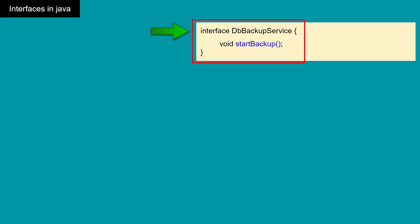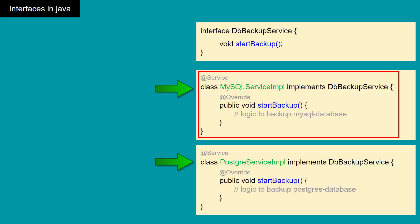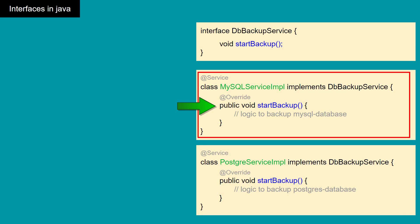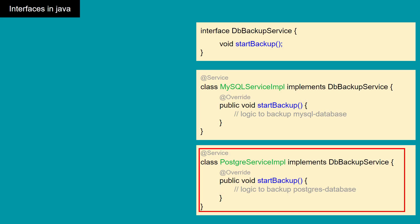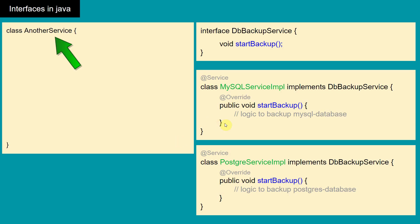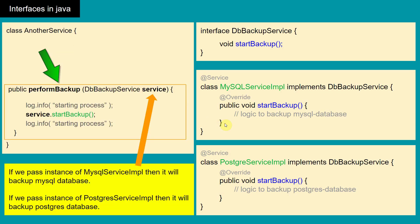Consider this example: a DB backup service. Here we have one abstract method, 'startBackup', and we have two implementations — MySQLServiceImplementation and PostgresServiceImplementation. In MySQLServiceImplementation we have implemented 'startBackup' which takes the backup of a MySQL database, and in PostgresServiceImplementation we have overridden 'startBackup' which takes the backup of a Postgres database.